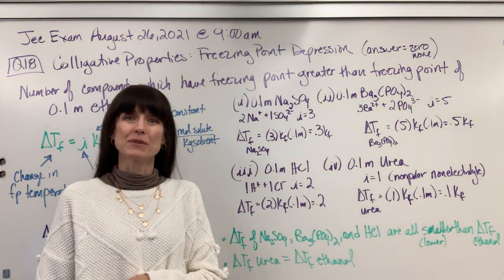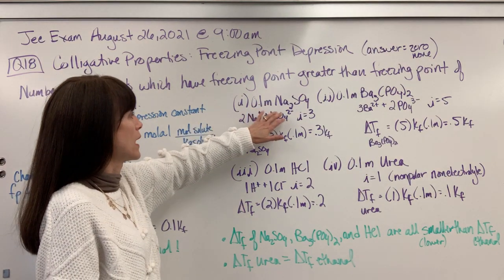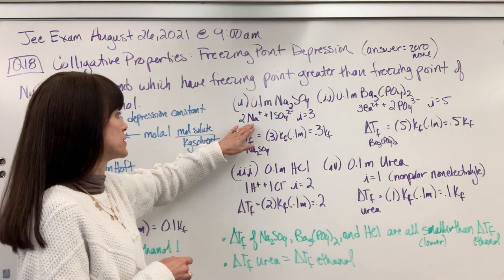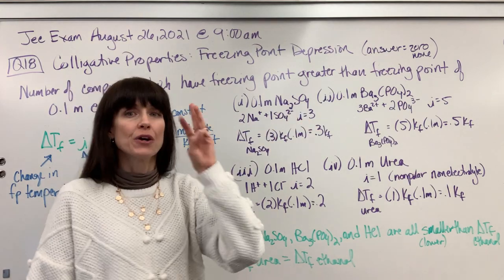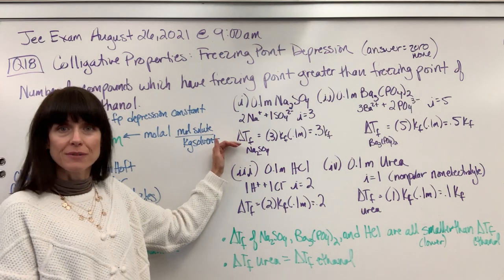Let's look at the four options that they gave us. So in our first option, we have 0.1 molal sodium sulfate. When this dissociates, it's going to produce two sodium ions and one sulfate ion, which gives us three total particles. Three particles. Plug this in.